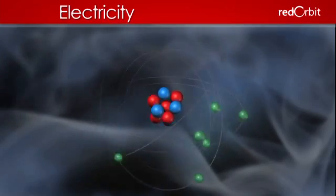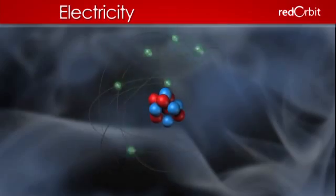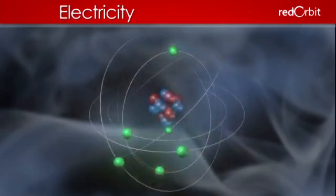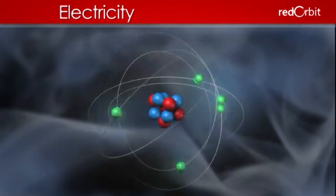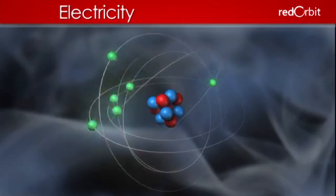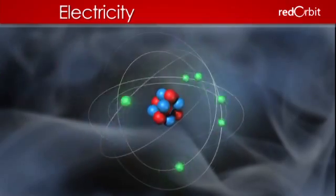The center of the atom includes neutrons and protons, while the electrons orbit the center like the Earth orbits the sun. Stable atoms have an equal number of protons and electrons, and have no charge.